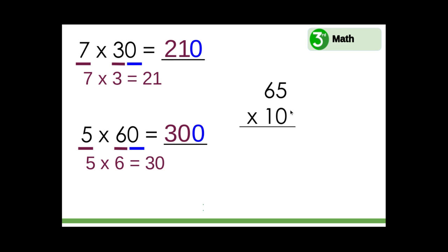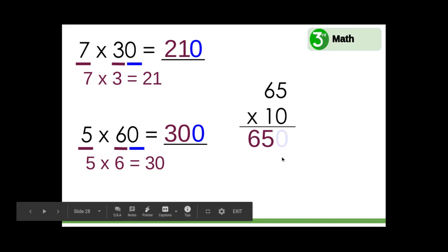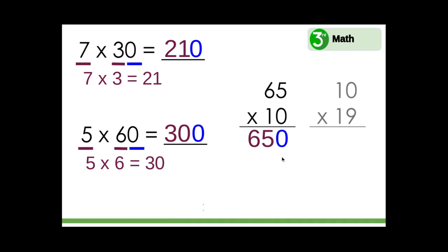Let's look at two more problems: sixty-five times ten. We can do sixty-five ones — that would be sixty-five. But this is sixty-five ten rods, which is six hundred fifty. What about ten times nineteen? Nineteen ones would be nineteen, but this is nineteen tens. So we add a zero so that nineteen starts in the tens place. Ten times nineteen equals nineteen tens, which is one hundred ninety.